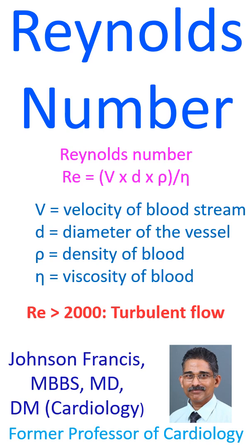What is the significance of this number in the cardiovascular system? As mentioned above, when the number is above 2000, flow becomes turbulent. Otherwise, the chance of having a murmur or bruit increases.